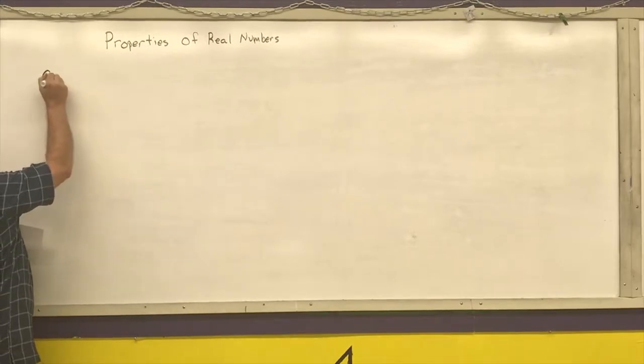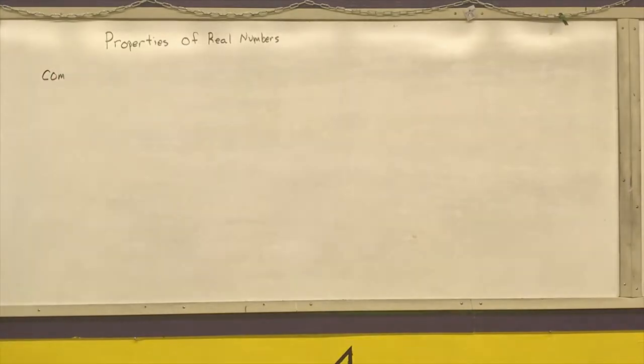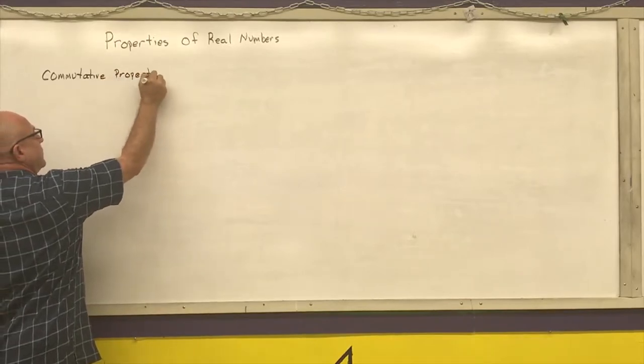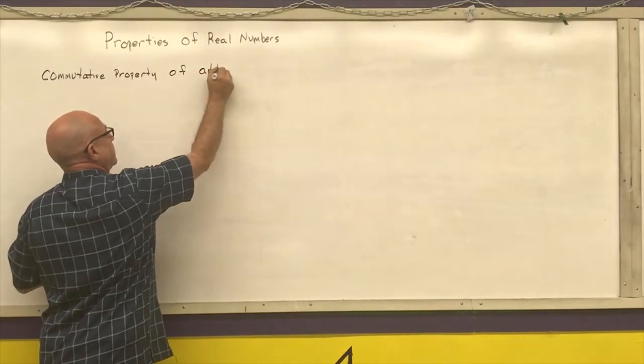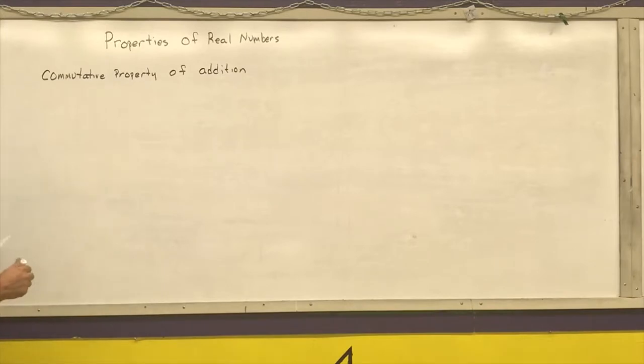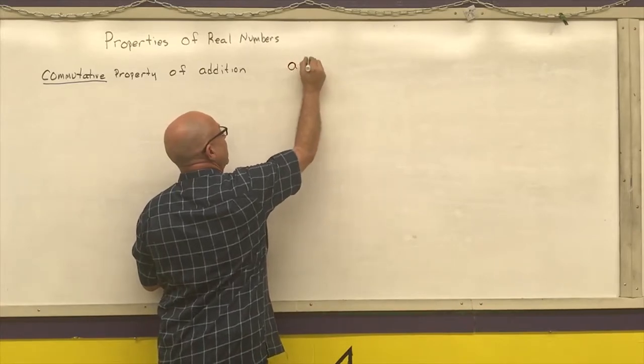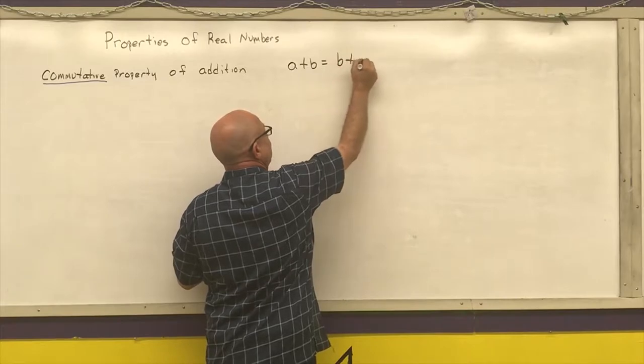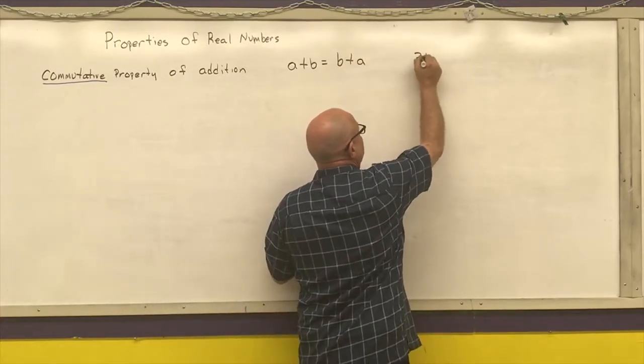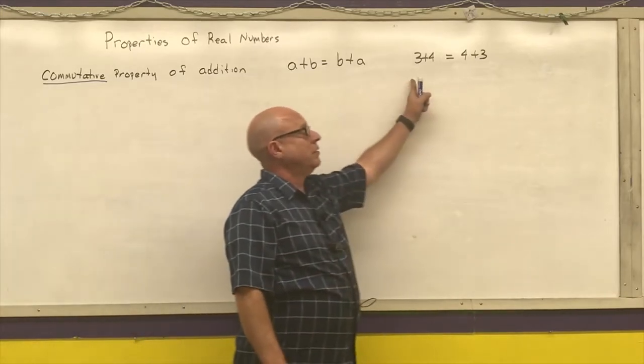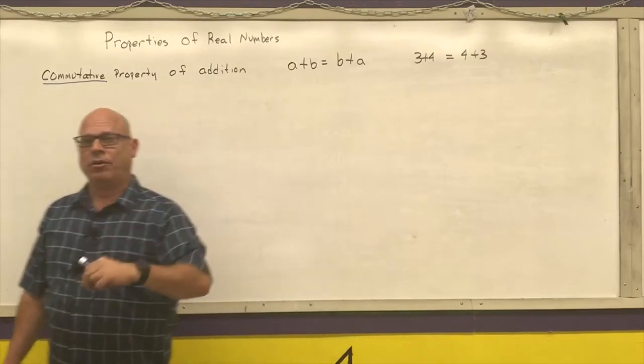The first one is the commutative property of addition. A big thing to remember is the word commutative means order does not matter. In this case, A plus B is the same thing as B plus A. A real world example: 3 plus 4 is exactly the same thing as 4 plus 3. So if I am given 3 plus 4, I can rewrite it directly as 4 plus 3. I can change the order of addition.